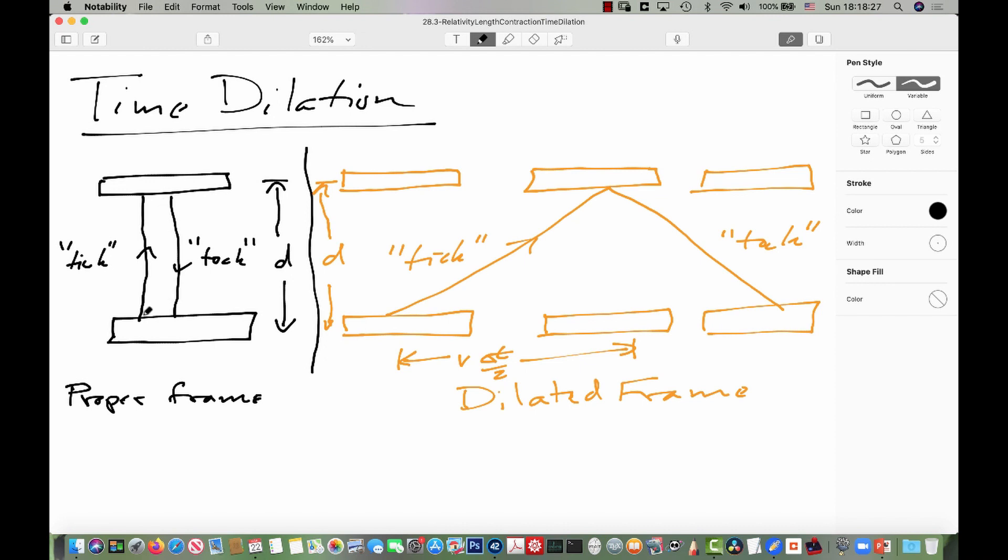So the classic thought experiment due to Einstein is he was thinking, what's the best clock I can possibly build? And what he imagined was a light clock. A light clock is where we can shoot a photon of light and have it rattle back and forth between a mirror. At the essence, all you need out of a clock is something that reliably goes tick-tock. The photon going from one mirror to the other is a tick. Then the return trip is a tock.